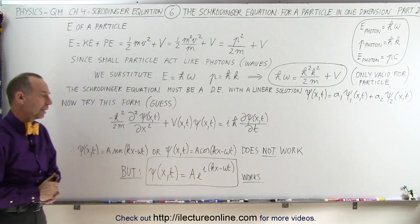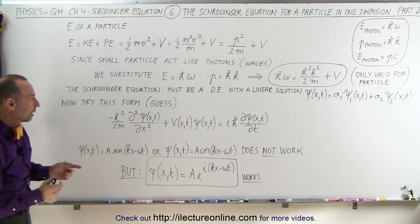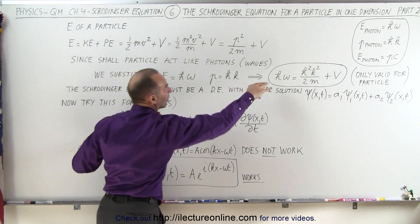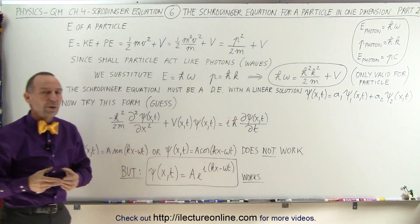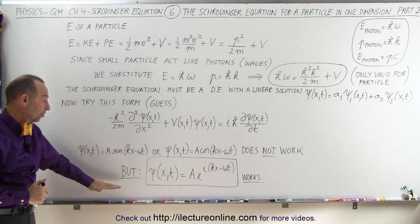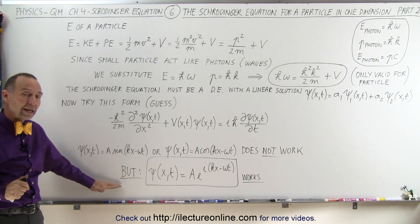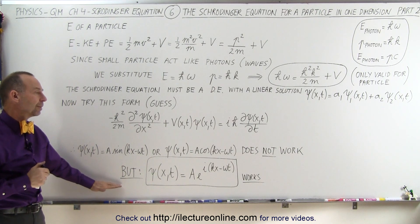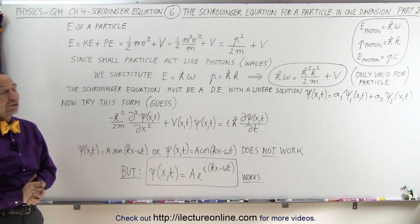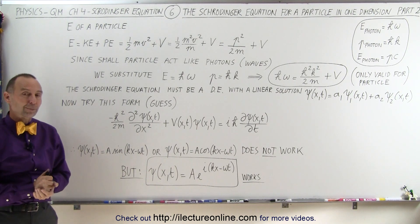And of course, the constants came from the relationship between photons and small particles. Anyway, so they said, this is what the solution should look like. Now let's go ahead and assume that to be the case. And let's go to our next video to see where they went at that point.